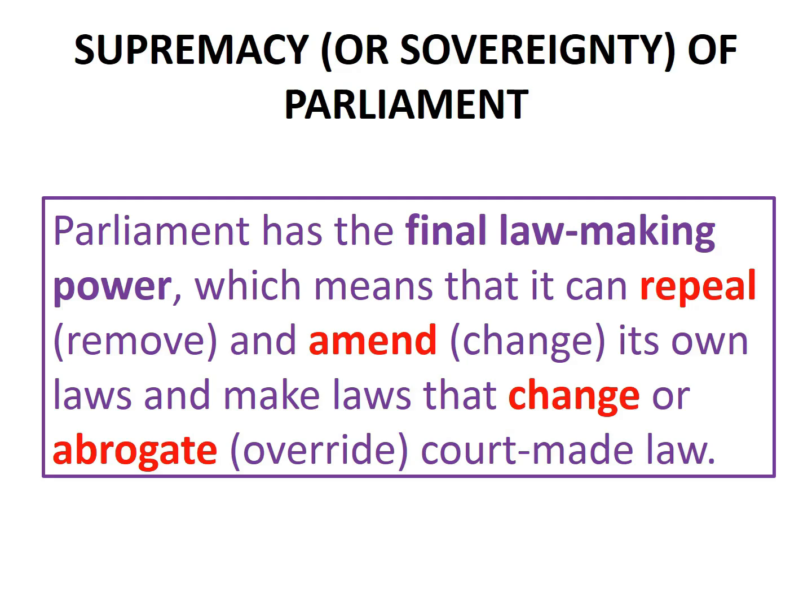Second, Parliament can make laws that change or abrogate — that is, override — court-made law. In other words, if Parliament wants to, it can make a law that replaces or overturns common law made by judges. This means Parliament can change a precedent established by a court, or change the meaning of a word in a statute where a court has interpreted that word in a particular way.